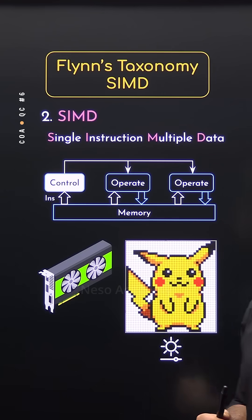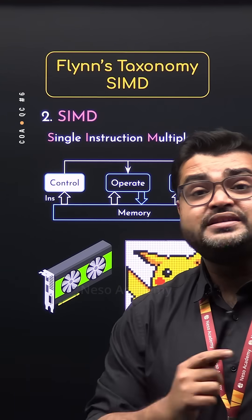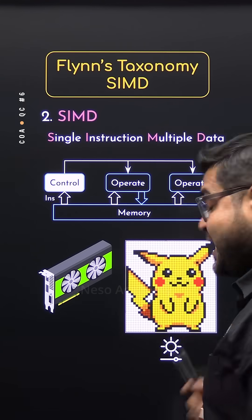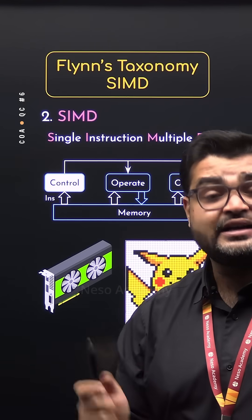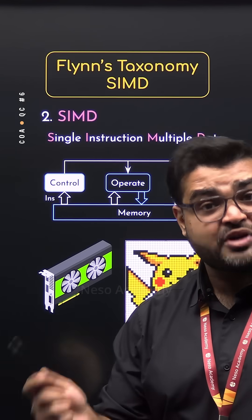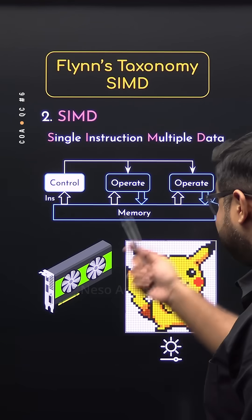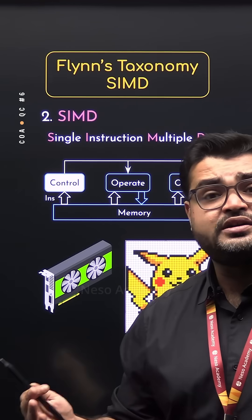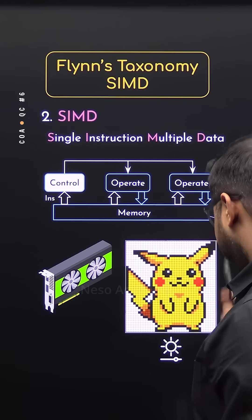Let's say we are going to increase the brightness of an image. Any digital image is the accumulation of multiple pixels, and in each pixel there is a color set called an RGB triplet. So when we are increasing the brightness of the entire image, we are basically altering the RGB values of every pixel.